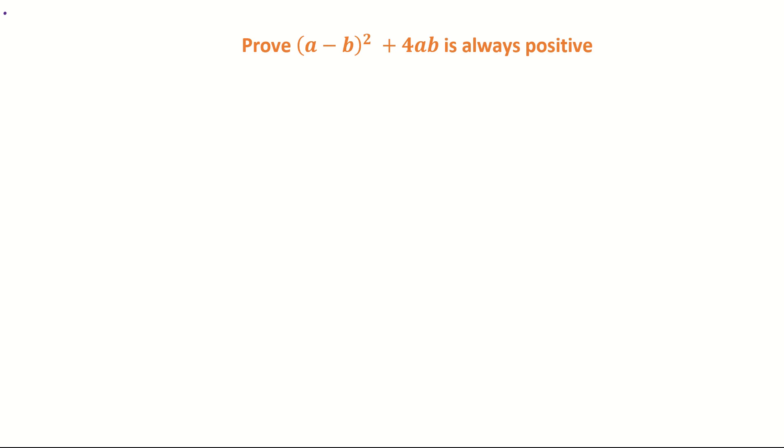In this video we are going to prove that (a - b)² + 4ab is always positive. Just make sure you understand that (a - b)² means you're multiplying it by itself, so something squared means we're multiplying by itself.